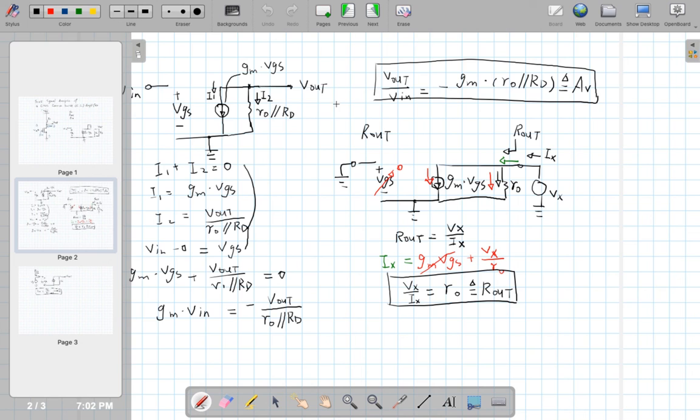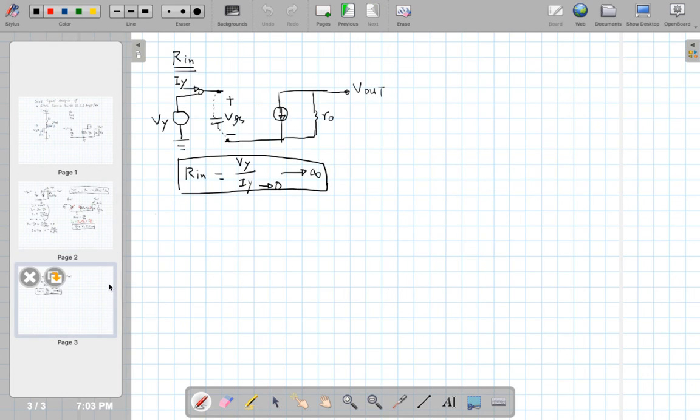To summarize, the voltage gain equals minus gm times R_load. The output resistance equals R0, and the input resistance is close to infinity. Thank you for watching.